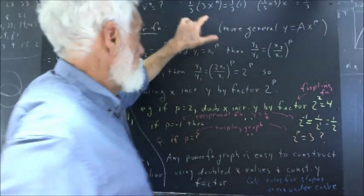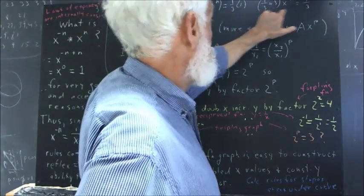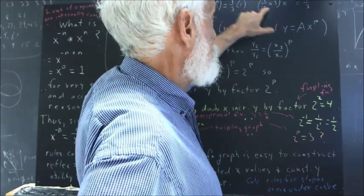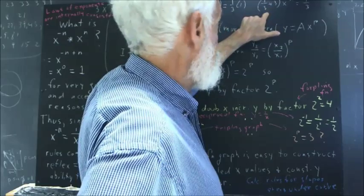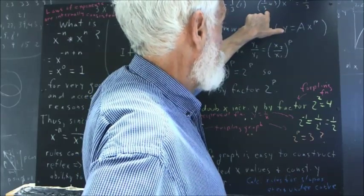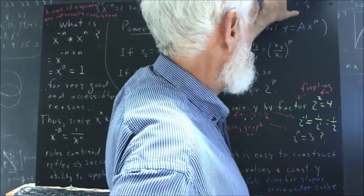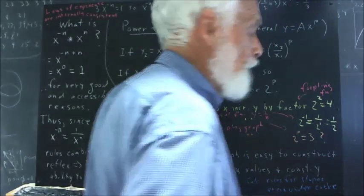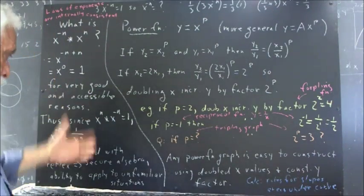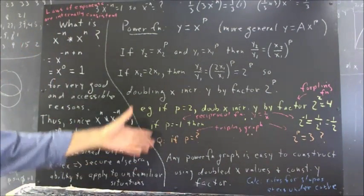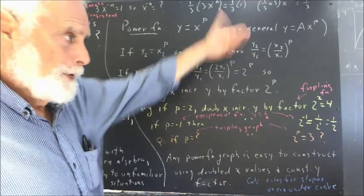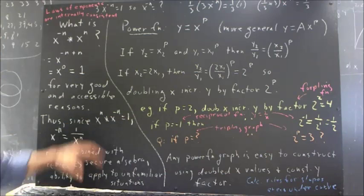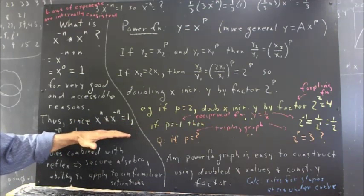Then technically you need to regroup the one third and the three using the associative law. And then you know that one third is the multiplicative inverse of three so that this is one. And by the identity property one times x to the negative n is x to the negative n. So x to the negative n would be one third. Now that's not important for the argument we're doing here except that people needed to see that in order to be able to solve this equation.